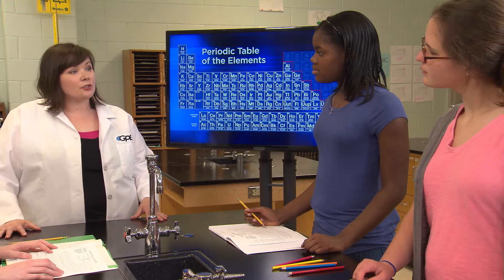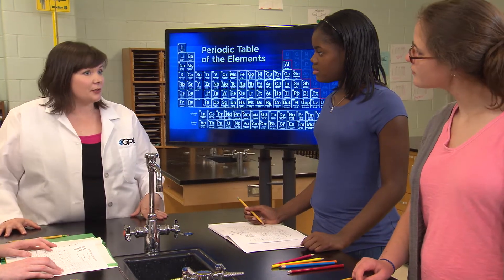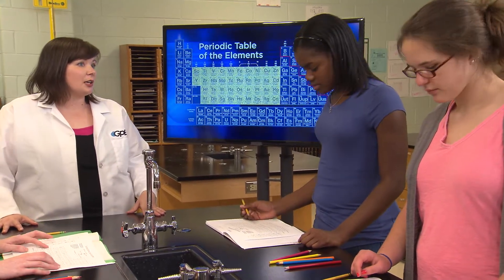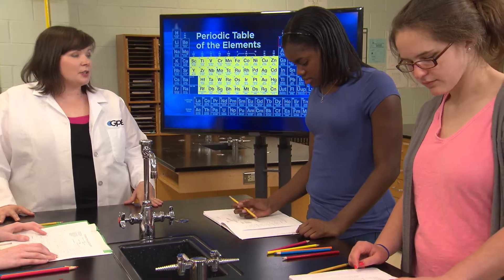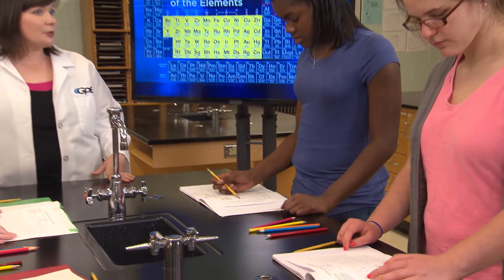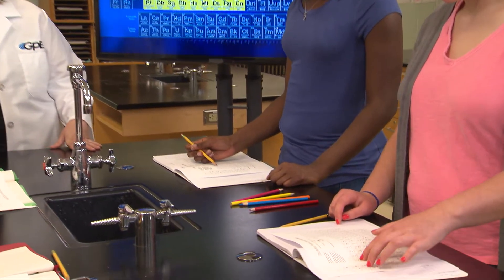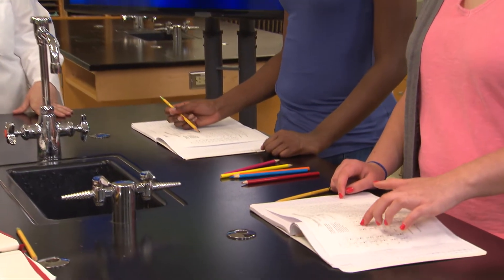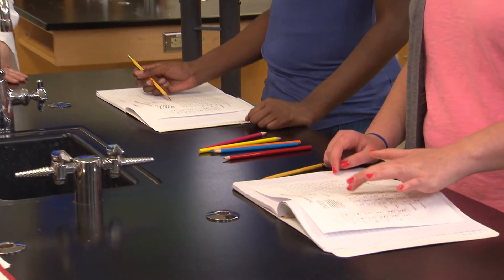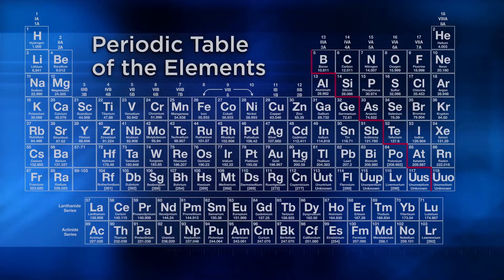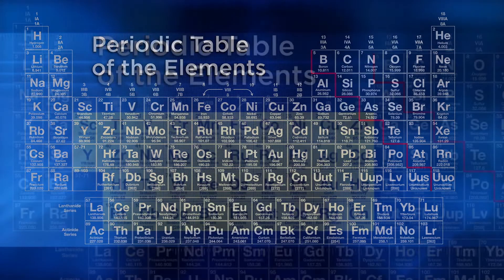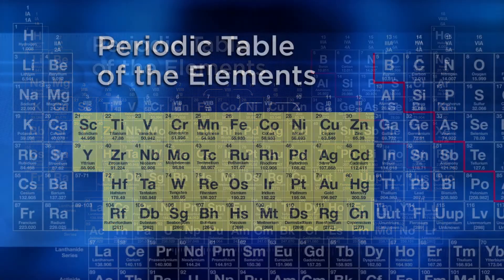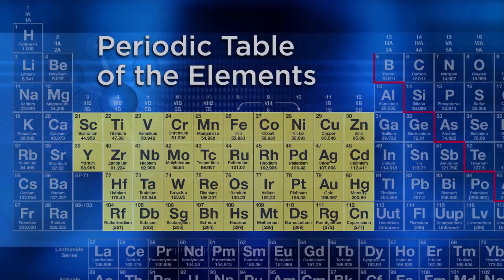These are known as transition metals. Find column 3 on your periodic table. Start with column 3 and count 10 columns over to column 12. These 10 columns make up the transition metals. Lightly color each of these columns in one single color.